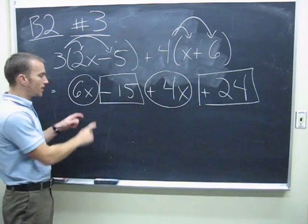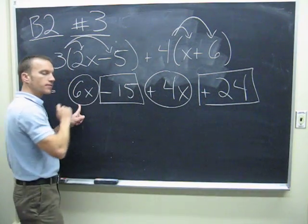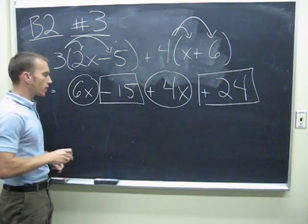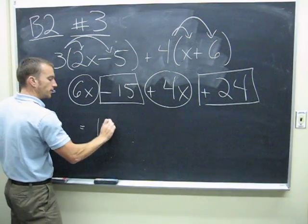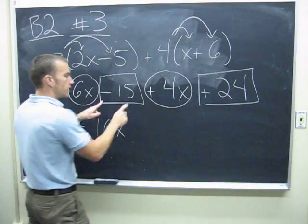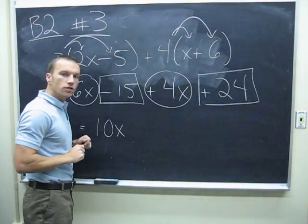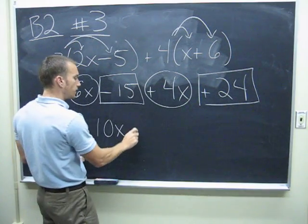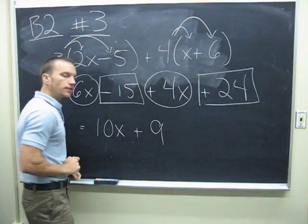So once I do that, I identify them by the power of x. 6x and 4x equals 10x. Negative 15 plus 24 is 9, and I'm done.